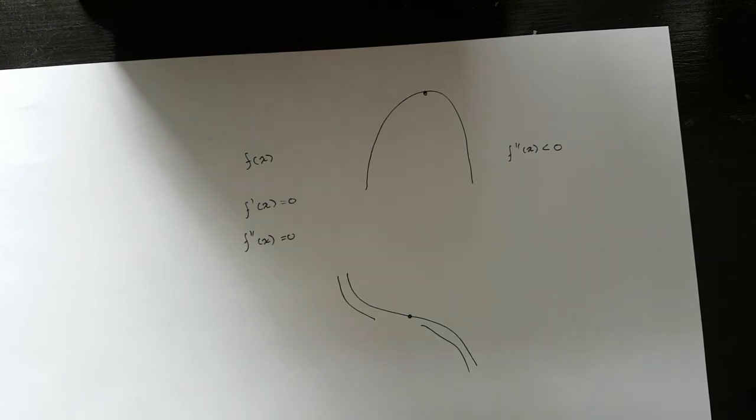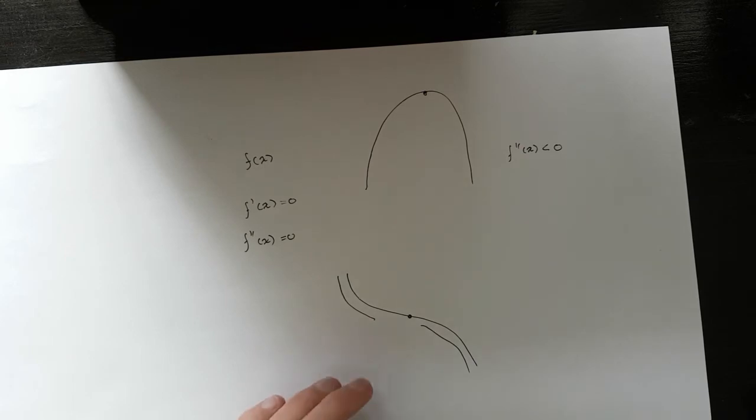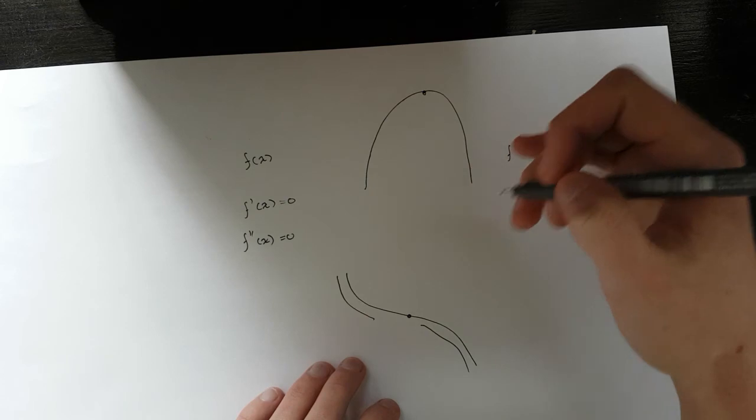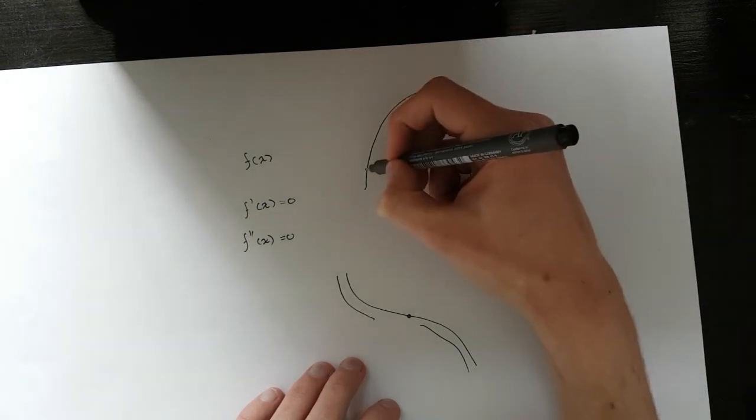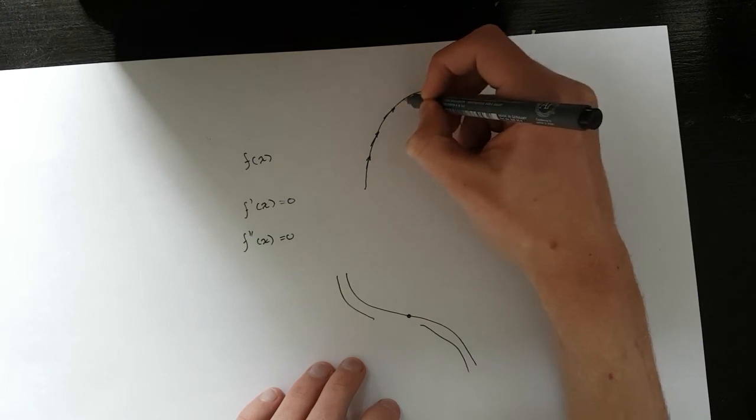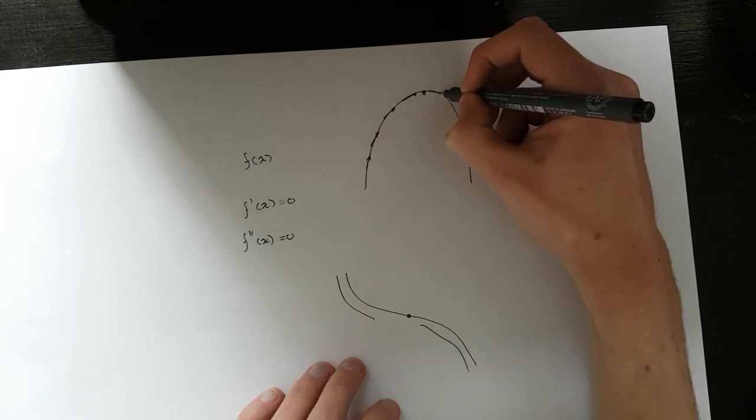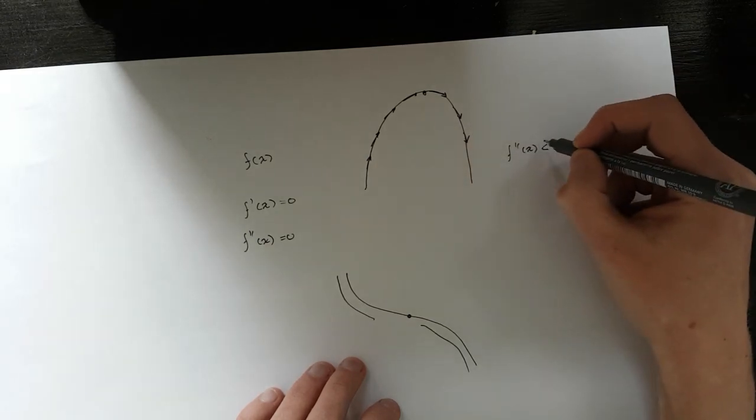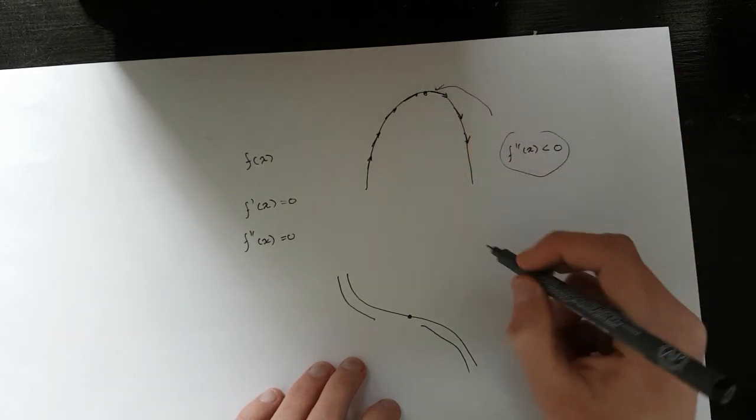So basically if the value is smaller than zero, it tells you that it's the maximum point. It tells you that it's a maximum point because you're taking the derivative of this and it's smaller than zero. So here all the slopes are positive and now it's decreasing. So that's how you know that since this is smaller than zero, this is a maximum point.